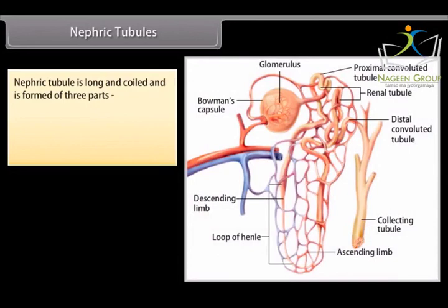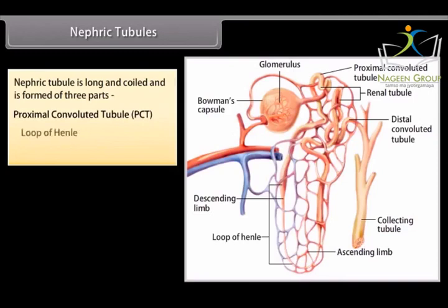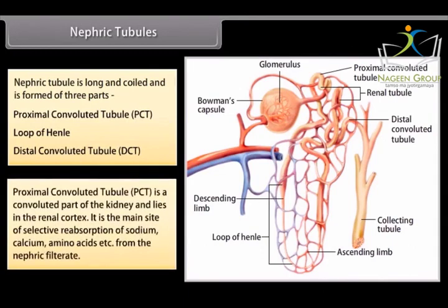The nephric tubule is long and coiled and is formed of three parts: the Proximal Convoluted Tubule (PCT), the Loop of Henle, and the Distal Convoluted Tubule (DCT). The PCT is a convoluted part lying in the renal cortex. It is the main site of selective reabsorption of sodium, calcium, amino acids, etc., from the nephric filtrate.